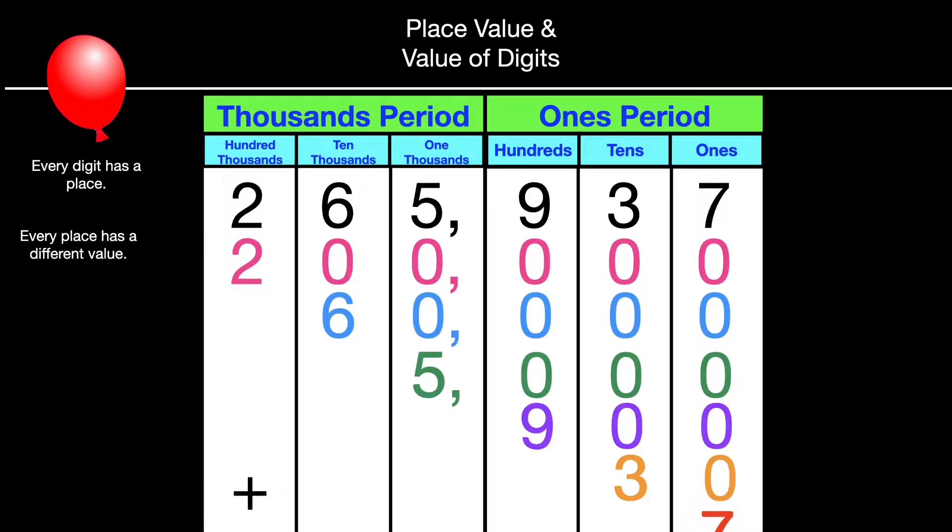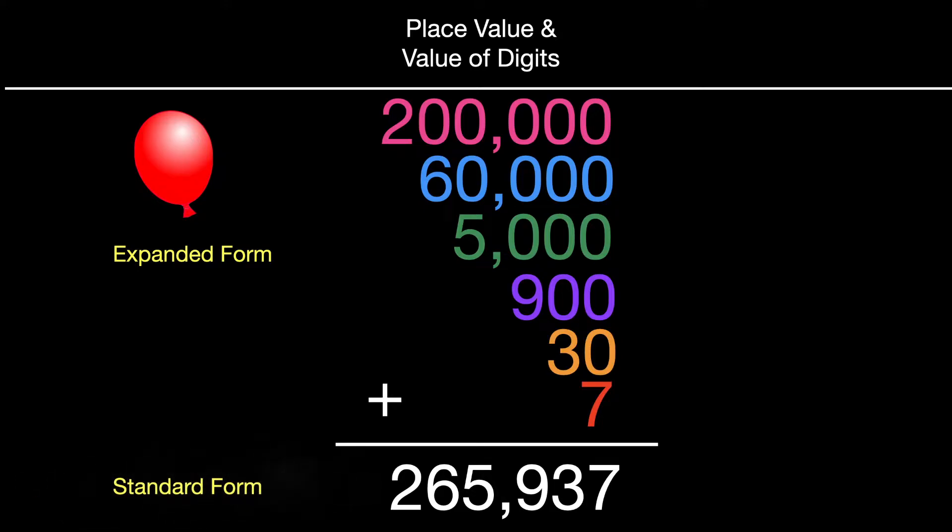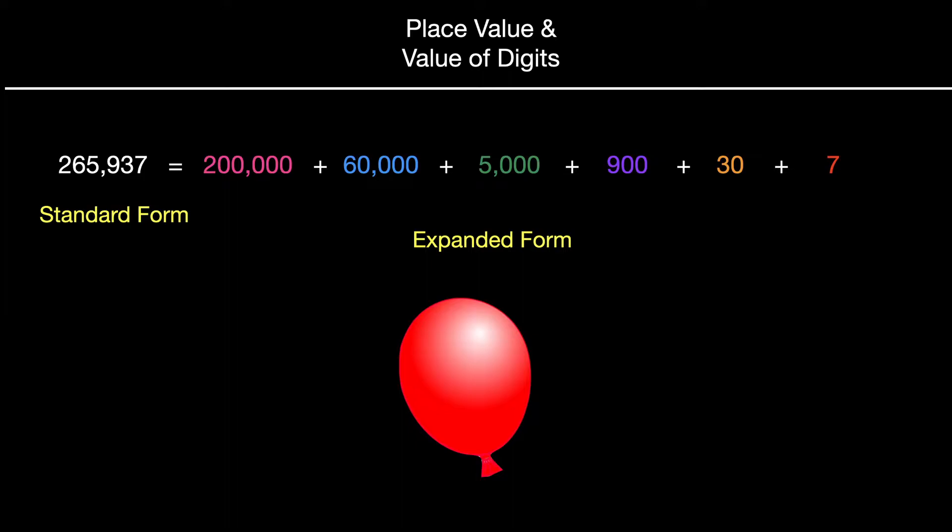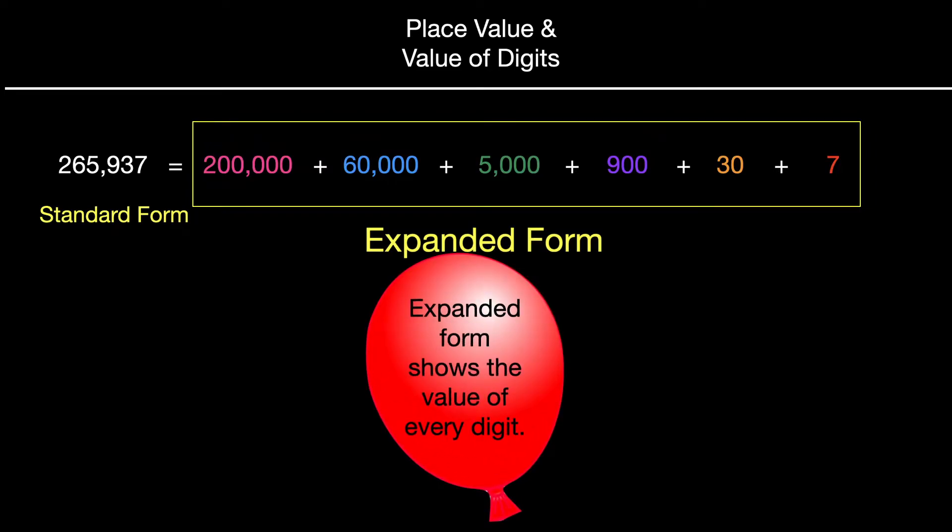If we were to add that up, we would have our number in expanded form, except that we're showing it going up and down. And it would equal our original number of 265937. Normally, it's not shown that way, but it's shown going from the left side to the right side, and that part there is our part that's in expanded form. So remember, expanded form is showing the number in a larger way with all the place values, and the value of every digit is shown.